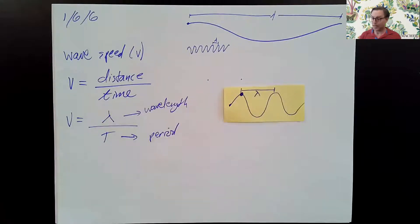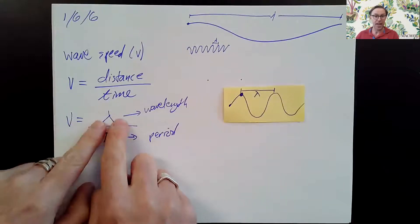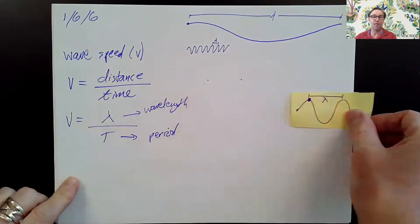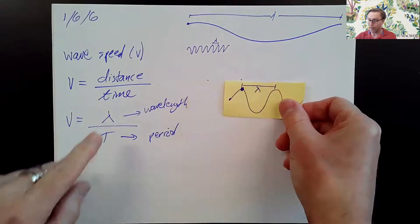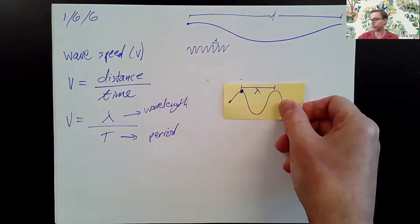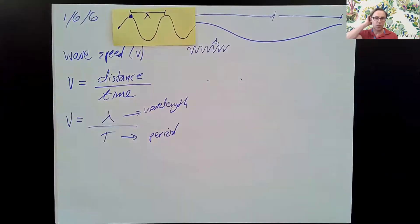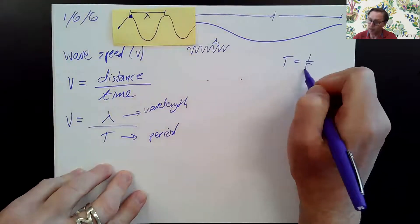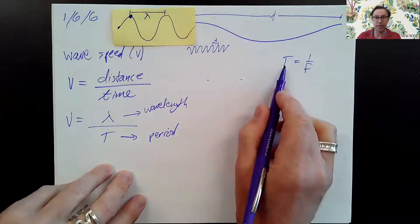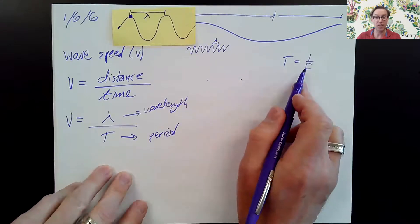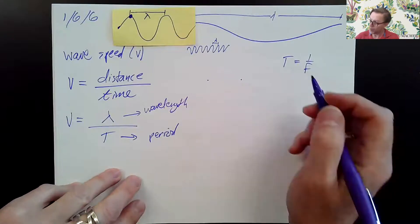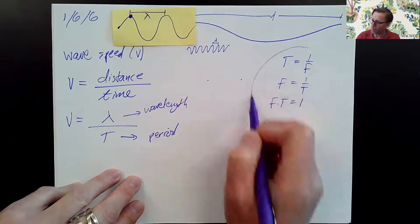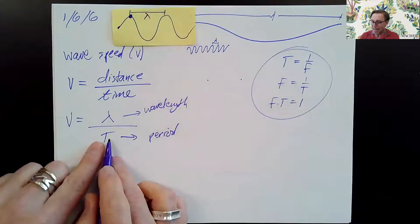One way of calculating wave speed is if you know the wavelength and you know the period, divide them and that gives you the speed — V equals lambda over T. It gives you the speed no matter how far you're going. If you went one wavelength, the time it would have taken was one period. Period and frequency are reciprocals: period is the time for one cycle, frequency is the number of cycles per second. So frequency equals one over period, or frequency times period equals one.